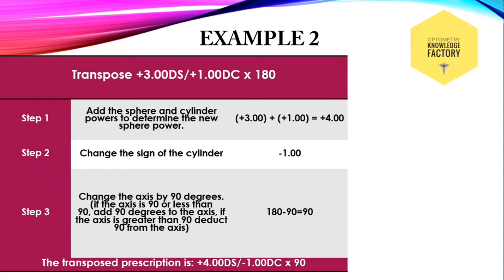Example 2: transpose plus 3 diopter sphere with plus 1 diopter cylinder at 180. Here this is convex cylinder form, and we have to convert it into concave cylinder form. First step: add plus 3 with plus 1, add sphere with cylinder, that is plus 4. This is the spherical component of the transposed form.